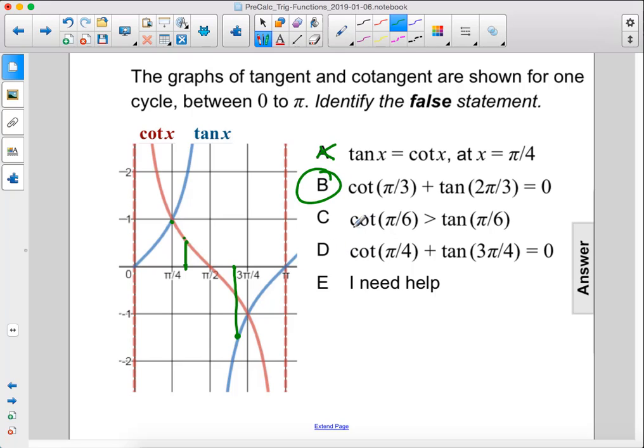So this is our answer. Cotangent of π/6 is going to be like way up here somewhere, that is greater than tangent of π/6, which is right there.